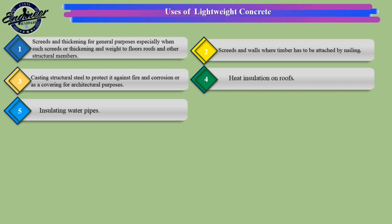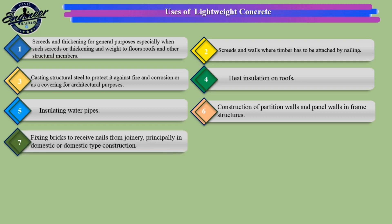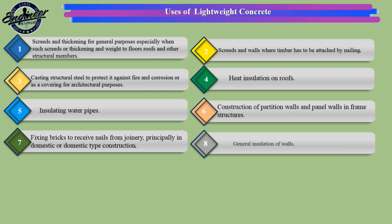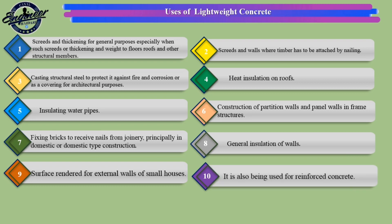5. Insulating water pipes. 6. Construction of partition walls and panel walls in frame structures. 7. Fixing bricks to receive nails from joinery, principally in domestic type construction. 8. General insulation of walls. 9. Surface rendered for external walls of small houses. 10. It is also being used for reinforced concrete.